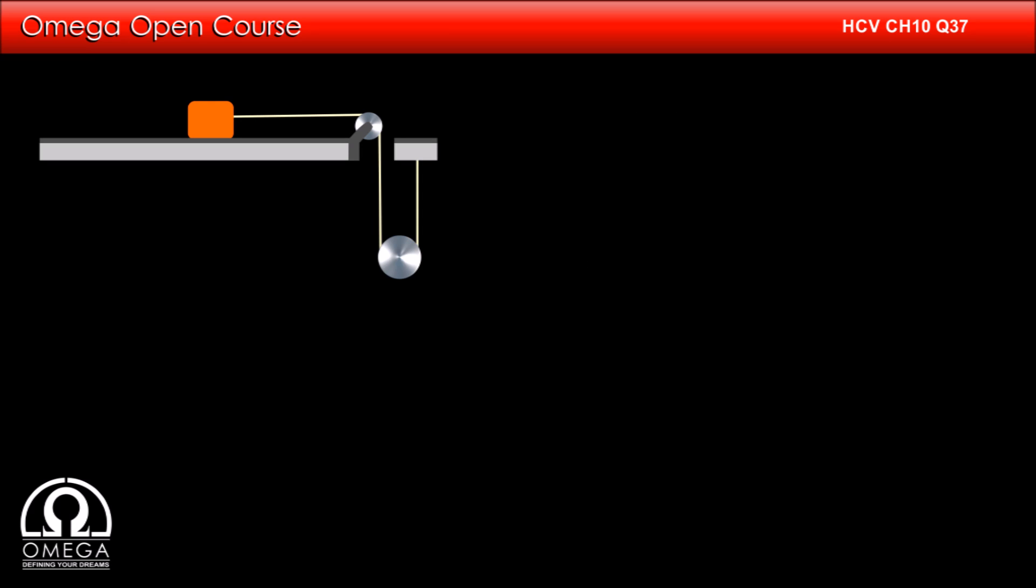Since the pulley here is not massless, it needs some torque to rotate. This torque must be provided by the tension in the string around it. Therefore, the tension in the string is not same on both sides of the pulley. Let us assume that the tension in the part of the string on the left side of the pulley is T1 and in the part on the right side of the pulley is T2.